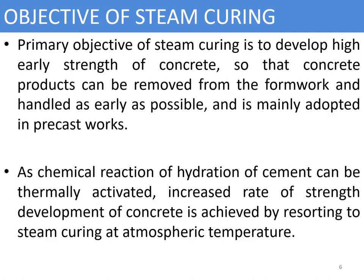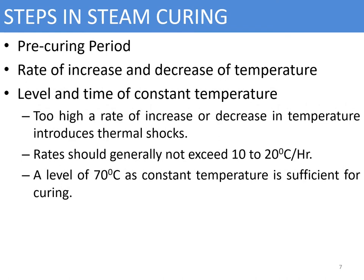Depending upon the requirements, the curing temperature and duration can be maintained to achieve early strength. Steam curing has three stages: the pre-curing period, the rate of increase or decrease of temperature in the curing chamber, and the level and time of constant temperature. Too high a rate of increase or decrease introduces thermal shocks, therefore the rate should be in the range of 10 to 20 degrees centigrade per hour, and a constant temperature of 70 degrees centigrade is sufficient for most curing applications.